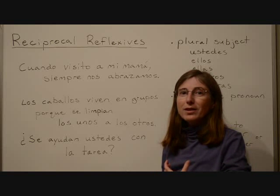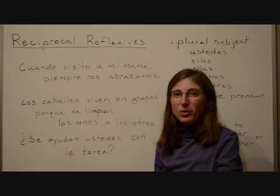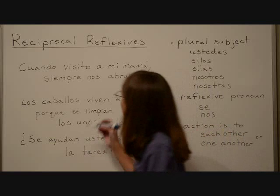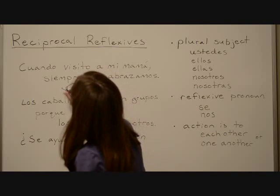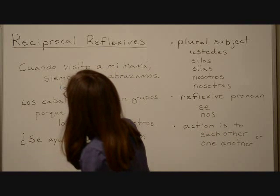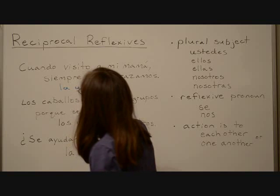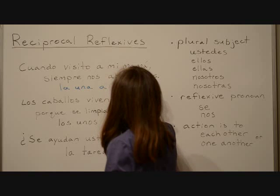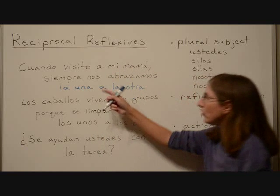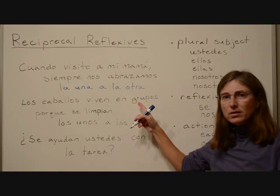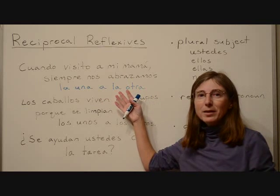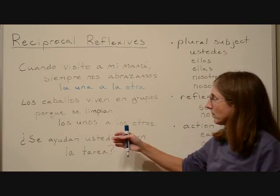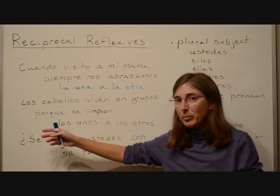And because I'm a girl and because my mom is a girl, 'one another' would be 'la una a la otra.' So if we add this on to the end of the sentence, it still means the same thing — we're just explicitly saying 'to each other.' Let's look at the next example.